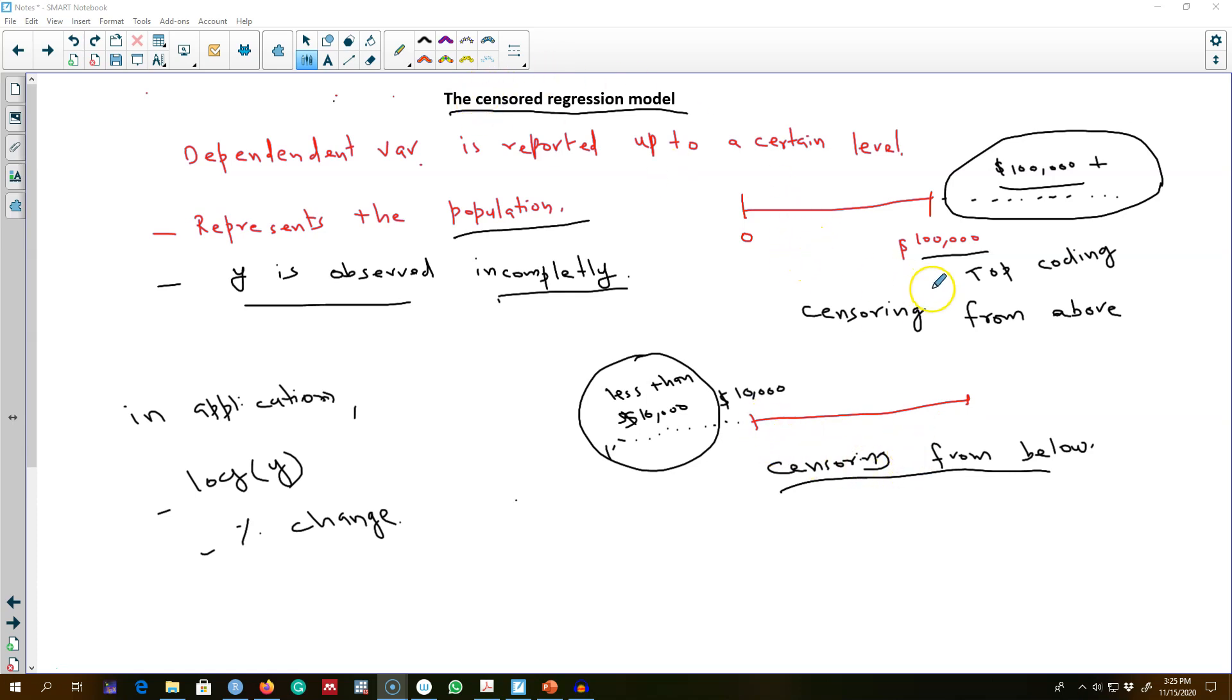maybe our research question is to analyze saving behavior of people with income below $100,000. So our research question is totally different. We will not sample this part of the population.